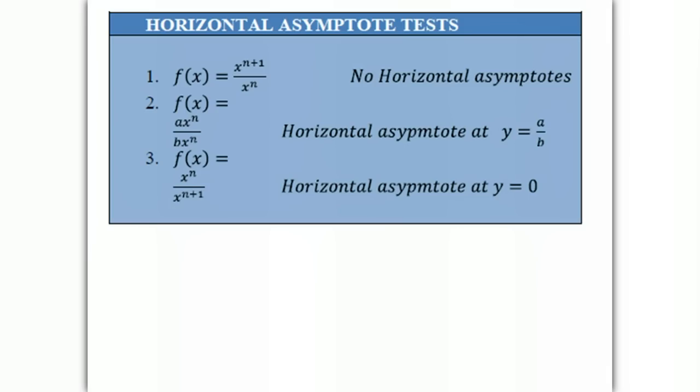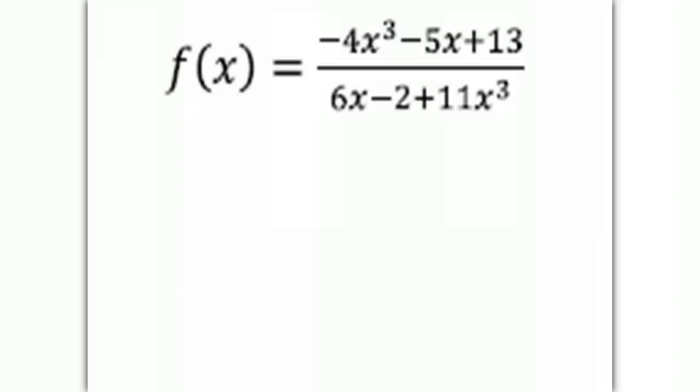Looking at our second explanation, we have the function f(x) equals ax to the n over bx to the n. So we have the same degree polynomials. The horizontal asymptote will be at y equals a over b. So if we look at an example,